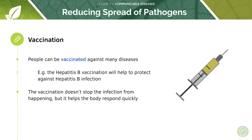Finally, vaccination — people can be vaccinated against many diseases by introducing a harmless antigen from a microorganism, perhaps a deactivated form. This antigen stimulates the creation of antibodies within the body against that pathogen. Vaccination doesn't stop the infection from happening initially, but it prepares the body's immune system and defence mechanisms to respond if ever exposed to the same pathogen again.